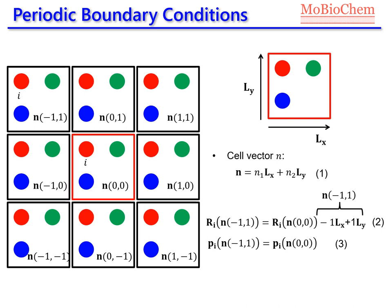Minus 1 because we need to go to the left on the x dimension and plus 1 because we need to go up on the y direction. Regarding the momentum, as we said before, everything which is happening on the primary cell will also happen on the other cells. That means the momentum of our atom in cell (-1,1) is equal to the momentum of this atom in cell (0,0). If we compute the interactions between atoms within the same cell, the interaction between I and J in the primary cell is the same as the interaction between I and J in cell (-1,1).